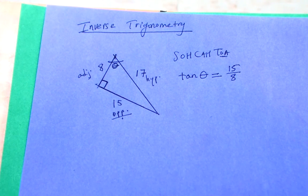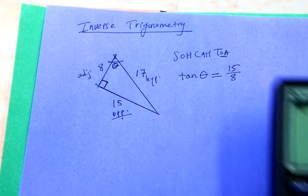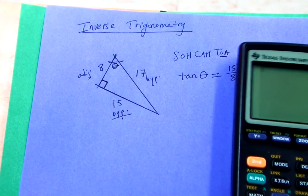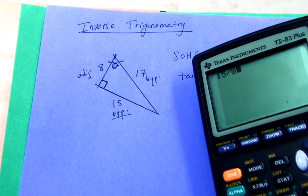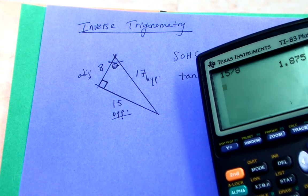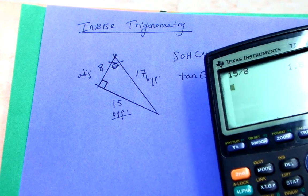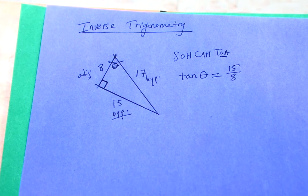I could put that as a decimal if you're more comfortable with that. But I'm going to actually keep it as a fraction, but just so you have an idea of what that would be approximately, 15/8 is exactly 1.875. And I'll leave it as a fraction though.